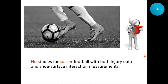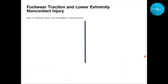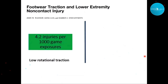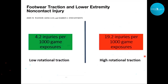Interestingly, there were no studies for soccer/football that had done this — injury data existed only within the NFL. Looking at one study where they collected athletes' shoes, took them to the actual playing surfaces, and measured traction, the low-traction group had notably fewer injuries while the high-traction group showed quite an alarming increase in injuries.